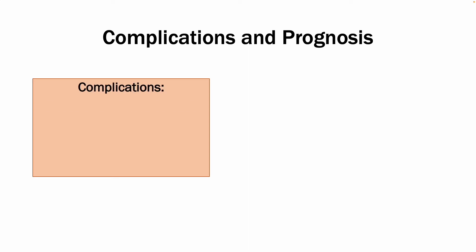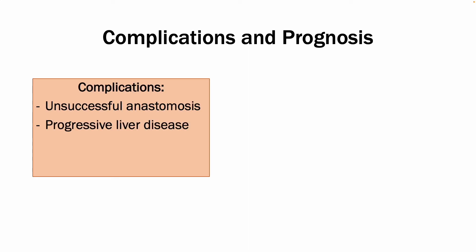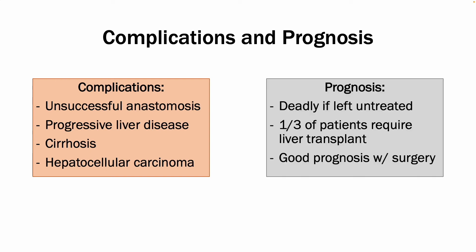The main complications include unsuccessful anastomosis, progressive liver disease, cirrhosis, and hepatocellular carcinoma. The condition will cause death if left untreated, and as mentioned, a third of patients require a liver transplant very early in life. However, those who have successful surgery have a good prognosis overall. This has been a quick overview of biliary atresia — please leave any questions in the comments.